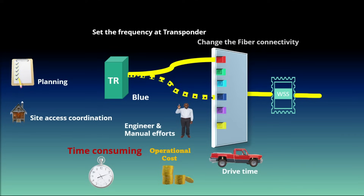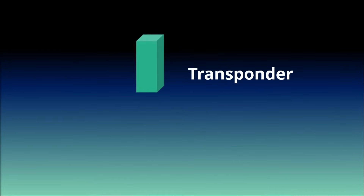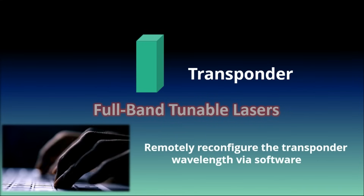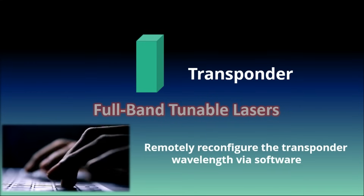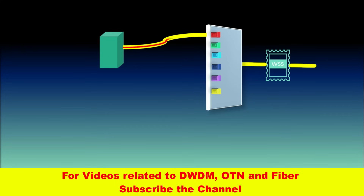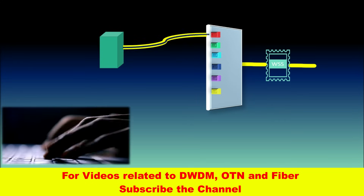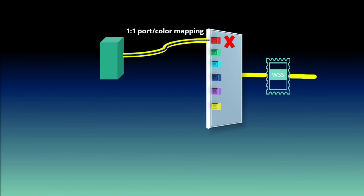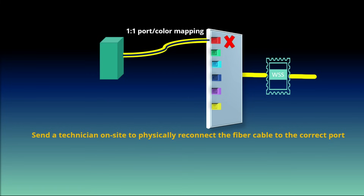To avoid physical intervention for any configuration change, the first enhancement was done on the transponder. Transponders were equipped with full-band tunable lasers. With this, service providers could remotely reconfigure the transponder wavelength via software — there was no longer a need to physically change the optics. This was a great convenience. But once the wavelength changed, the transponder was no longer connected to the correct ROADM port, and traffic was blocked because of the one-to-one port-to-color mapping. The service provider still had to send a technician on site to physically reconnect the fiber cable to the correct port in order to restore signal flow.